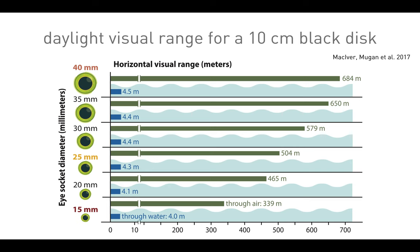As we increase orbit size — orbit size being a very solid proxy of eye size — the visual range through water is basically stable and doesn't change, but the visual range through air essentially doubles as we double orbit size. When we first did these calculations 10 years ago, I thought this must mean that when we transitioned onto land, there must have been a change in orbit size.